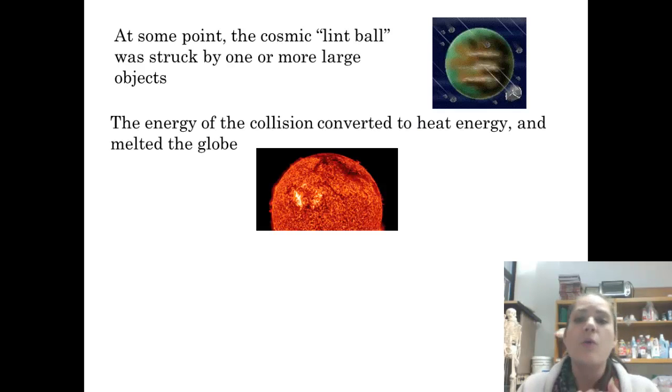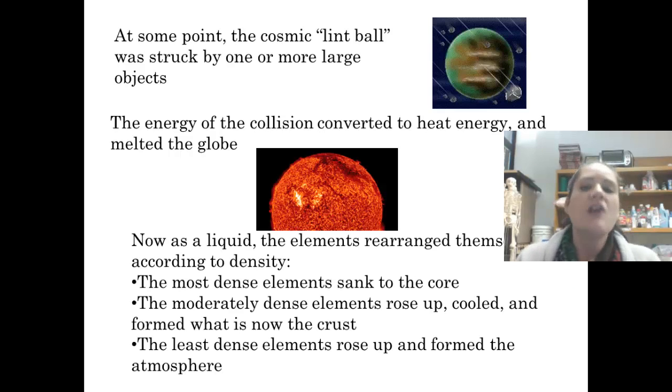And when two things get hit, what you get is a lot of heat. Some of that energy, some of that motion gets converted into heat energy. And so that giant collision created this huge amount of heat, and what that did is it caused everything in our little cosmic lint ball to melt because there was so much heat. So we actually had this melted goo. Once we had a liquid, the different elements that were in that liquid rearranged themselves according to density. Kind of like if you have salad dressing and you shake it up, it's all good and everything looks really mixed together. But if you let it sit for a little while, it'll sort itself out, and so then you'll have these layers. Well, that's what happened with the Earth.